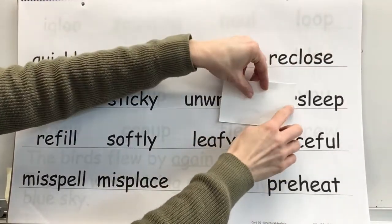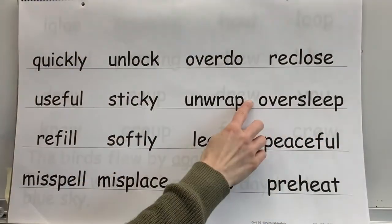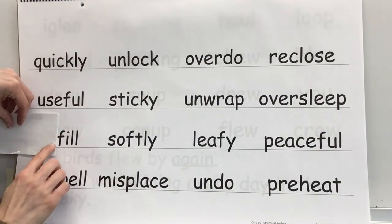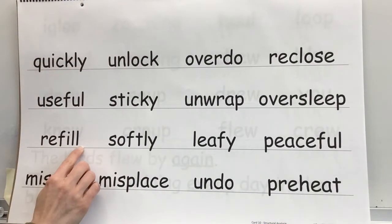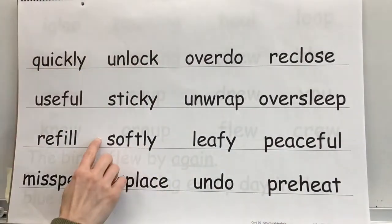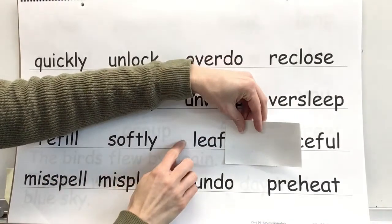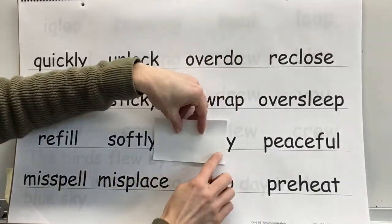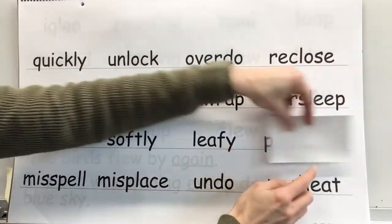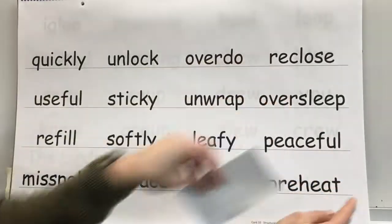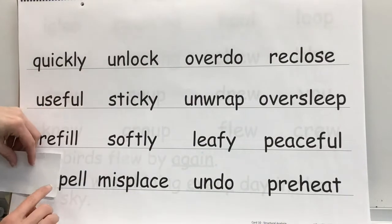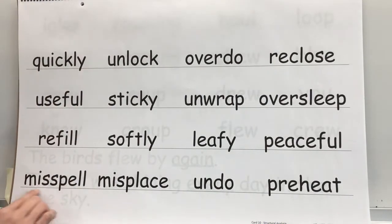Affix: over. Base word: sleep. Whole word: oversleep. Affix: re. Base word: fill. Whole word: refill. Base word: soft. Affix: ly. Whole word: softly. Base word: leaf. Affix: y. Whole word: leafy. Base word: peace. Affix: ful. Whole word: peaceful. Affix: mis. Base word: spell. Whole word: misspell.